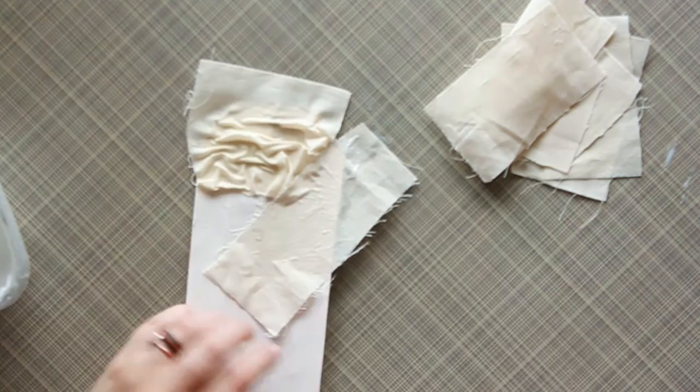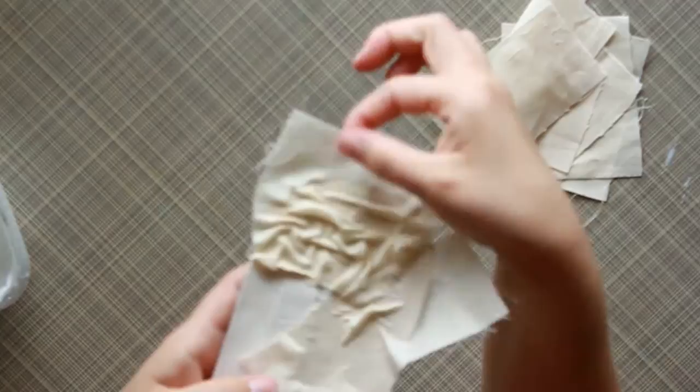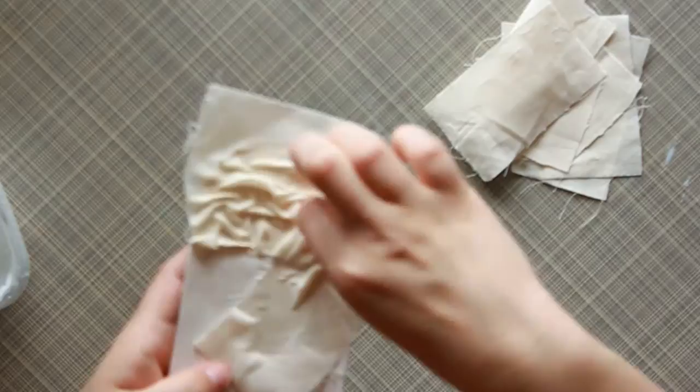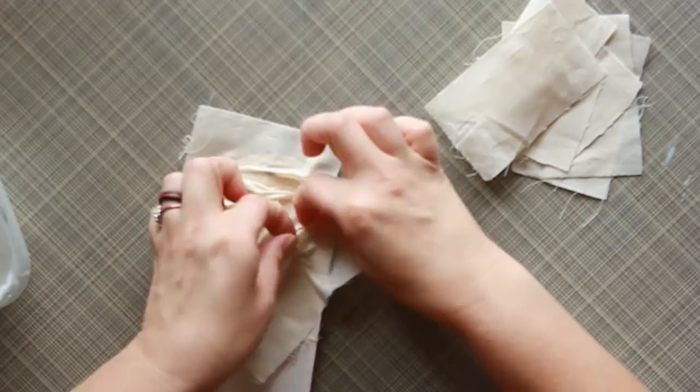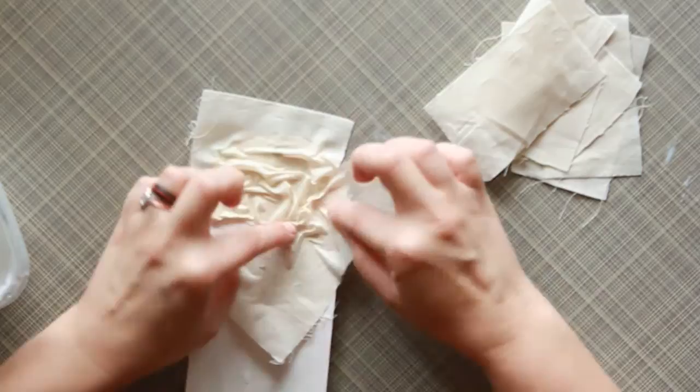Now right here where this fabric has overlapped this one, you'll see I have a straight line so I'm going to do the same thing. I'm going to curl it under so it will look like all one piece. Kind of just curl it under and then I'm going to scrunch it right in there.